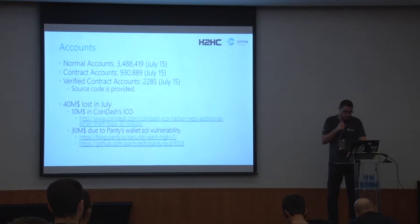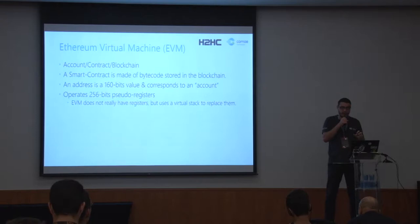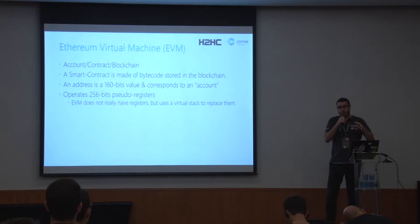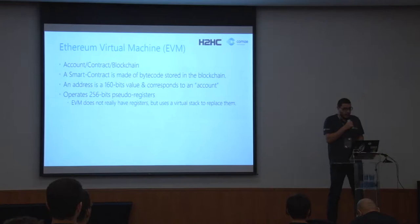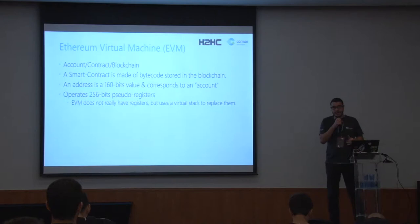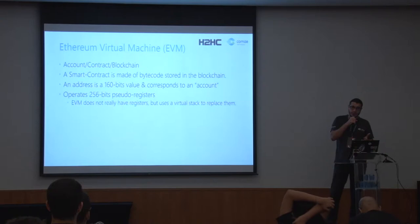Regarding the actual Ethereum VM — each contract can either be an account, a smart contract, or just some blockchain data. A smart contract is basically a bunch of bytecodes compiled from Solidity and stored inside the blockchain. Addresses of contracts or accounts are encoded on 160 bits. The EVM itself is operating on registers that are 256 bits — they don't really have registers; it's more like a virtual stack, which replaces your registers compared to a traditional architecture.